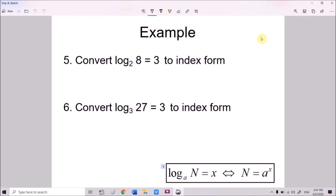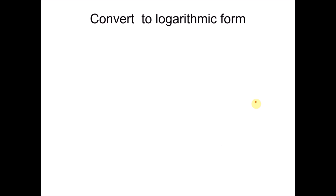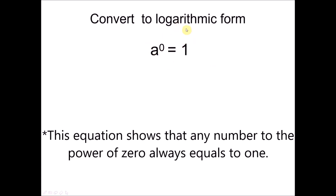Now converting from logarithmic form to index form: for log base 2 of 8 equals 3, take the 2 and move it to the right-hand side, giving 8 equals 2 to the power of 3. Similarly, for log base 3 of 27 equals 3, move the 3 to get 27 equals 3 to the power of 3. You can verify: 3 to the power of 3 is indeed 27. Now try converting this equation from index form to logarithmic form.